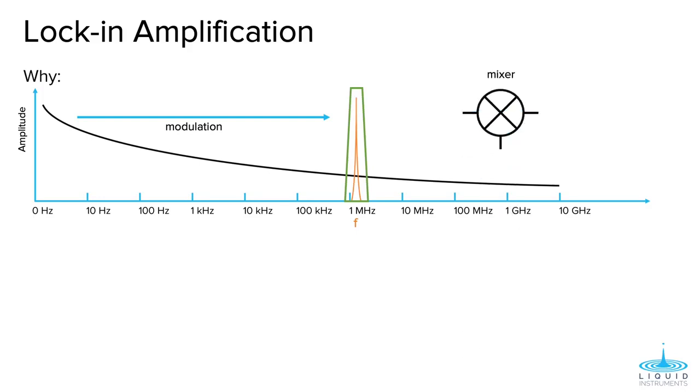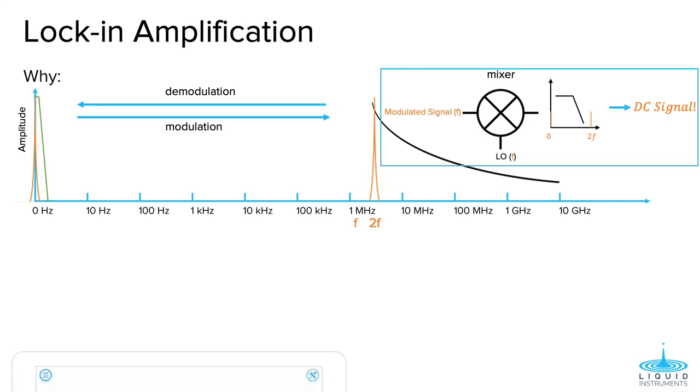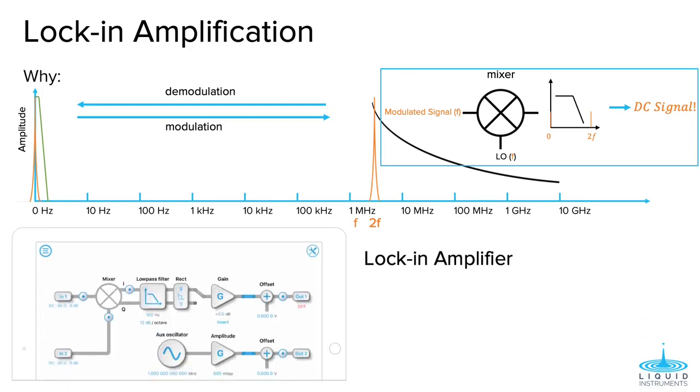So, instead of bandpass filtering, we can mix the signal with a local oscillator at the exact same frequency, which brings the signal back to DC. Then apply a fixed low-pass filter to extract our desired signal. This process is called demodulation and is the fundamental process of a lock-in amplifier.